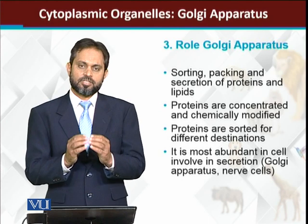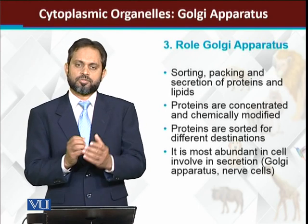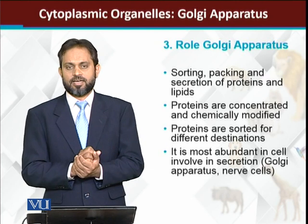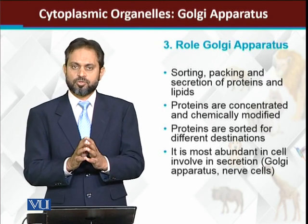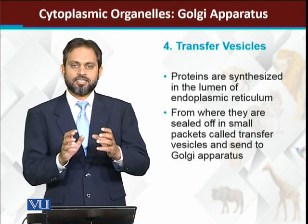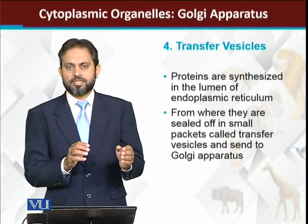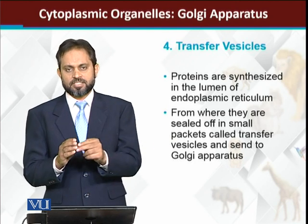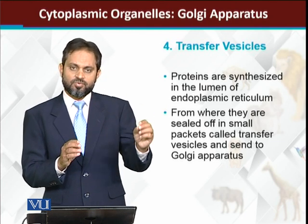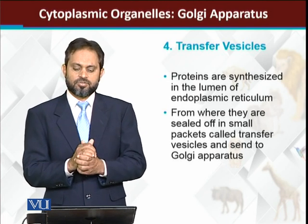Among the organelles mentioned, we have lysosomes — the enzymes going towards lysosomes are transported from the Golgi apparatus. So material transport is either towards the cell membrane or within the cell towards the lysosomes. Two terms are used here: transfer vesicles and secretory vesicles. Transfer vesicles carry material coming into the Golgi apparatus from the endoplasmic reticulum — small vesicles cut off from the ER and combine with the Golgi apparatus at the forming phase. These vesicles coming from the ER and bringing material towards the Golgi apparatus are called transfer vesicles.